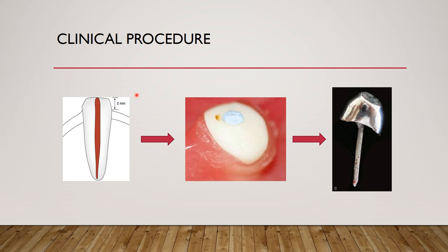For preparation: approximately 2 mm is left above the ridge. After endodontic treatment, a post is placed, the tooth is prepared and left 2 mm above the ridge. You can see the occlusal view of the tooth preparation and the internal view of the post and coping arrangement.